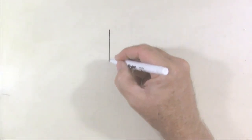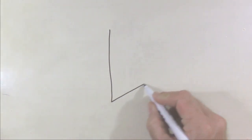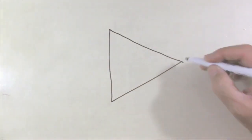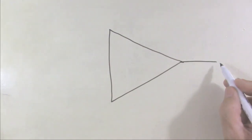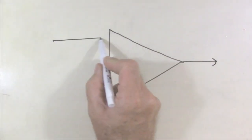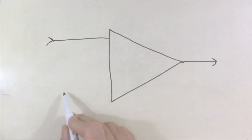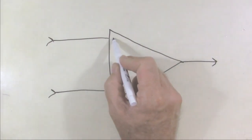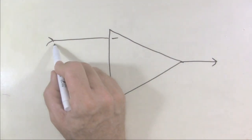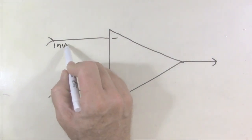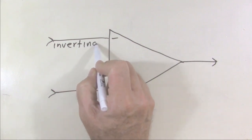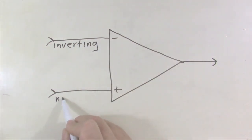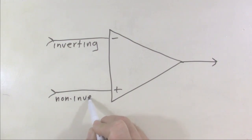I'm going to start by drawing the LGM model of the operational amplifier. We start out with the operational amplifier symbol — a triangle with a single output and two inputs. One is labeled plus, the other one is labeled minus. This one is the inverting input. This one is the non-inverting input. And that's the basic layout of an operational amplifier.